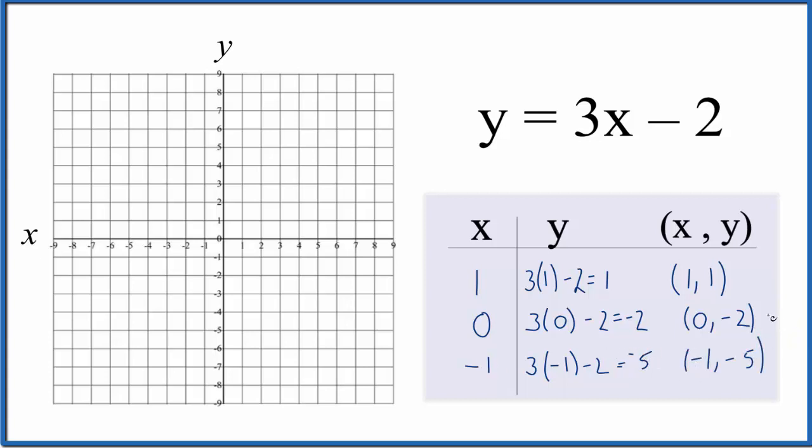So now that we have these three points, we'll just graph them. For (1, 1), that means x is 1 and y is 1. For (0, -2), x is 0, y is negative 2. And finally, we have x as negative 1 and y as negative 5. And you can see all three line up. We can put a line through them.